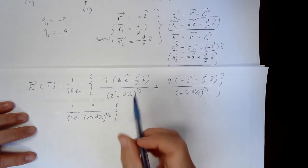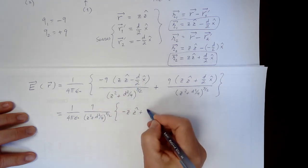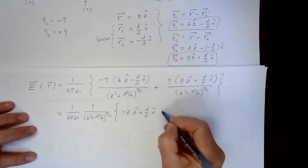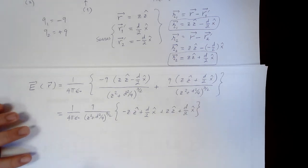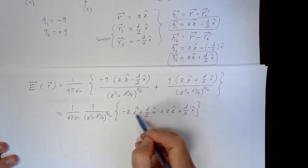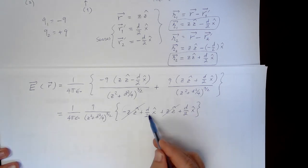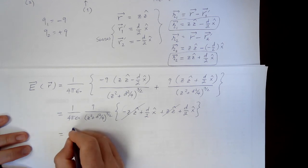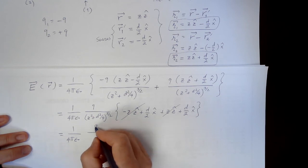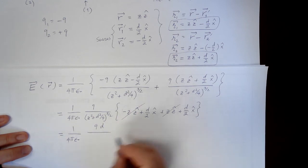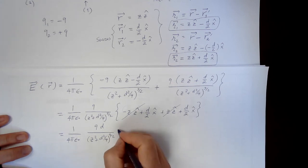Now, minus makes this minus z z hat. This minus makes this plus d over 2 x hat plus d over 2 x hat. Alright. You can easily see minus z z hat plus z z hat, they cancel. Alright. d over 2, d over 2 makes d x hat. So it becomes 1 over 4 pi epsilon naught, q times d over z squared plus d squared over 4 to the 3 halves, x hat.